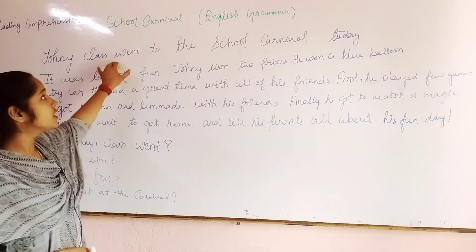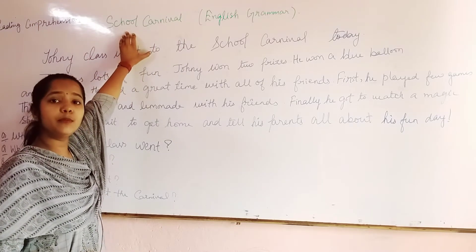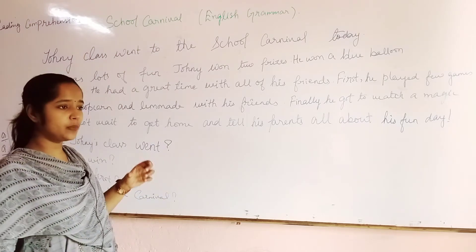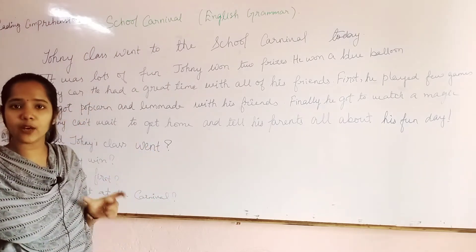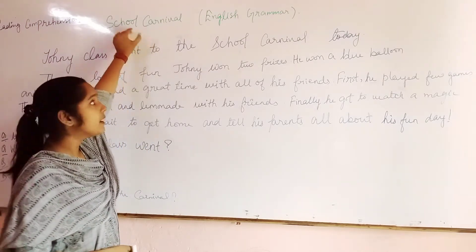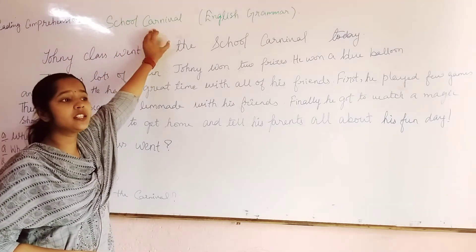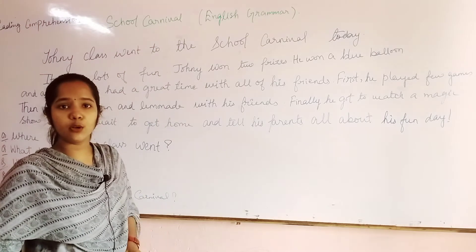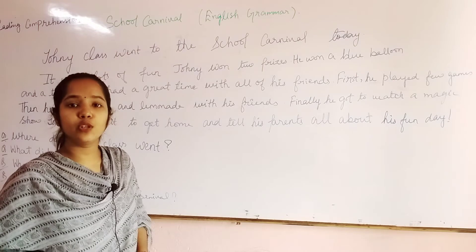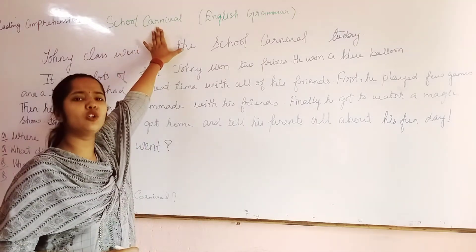This is a story of a school boy — you all are school students. The title of the story is 'School Carnival.' What is the word carnival? It means an event. You know — event, picnic. School takes you on a picnic or some events to enjoy and relax. So carnival means a school picnic.